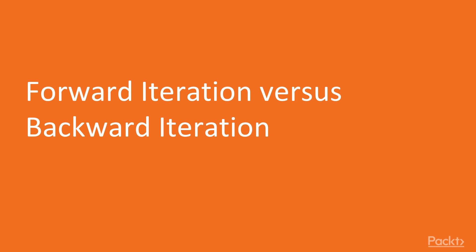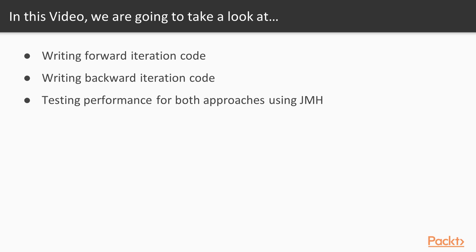Here is the first video in which we'll be doing a comparison between forward iteration and backward iteration. We'll be writing forward iteration code, leveraging the state and JMH and everything we learned in the previous section. We'll also be writing backward iteration code and testing both approaches using the JMH tool.